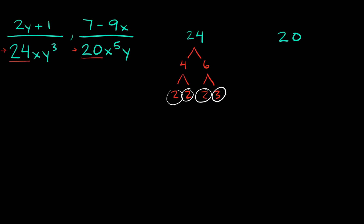Then we can do the same thing with 20. 20 breaks down into 4 times 5. 5 is prime so we'll circle that. And 4 again breaks down into 2 times 2, so we'll circle each of those.